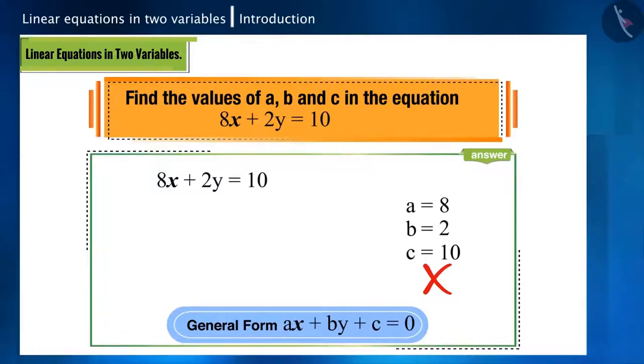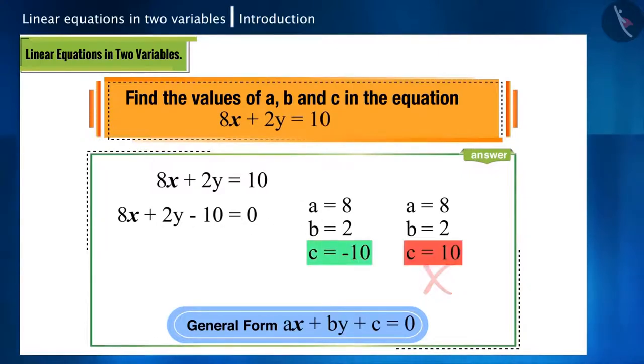So, first we will write it in this form. This will become 8x plus 2y minus 10 equals 0. Now we can compare it with the general form. So here a equals 8, b equals 2, and c equals minus 10, and not c equals 10.